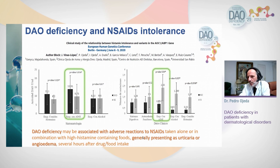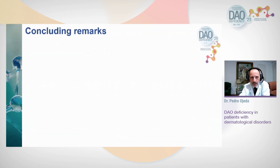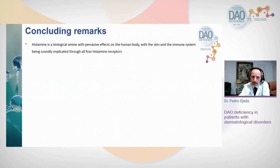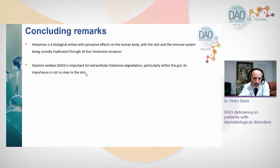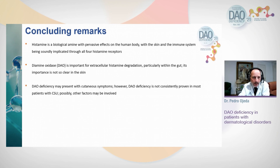Concluding remarks: histamine is a biological amine with pervasive effects on the human body, with the skin and immune system soundly implicated through all four histamine receptors. DAO is important for extracellular histamine degradation, particularly in the gut, but its importance is less clear specifically for the skin. It could degrade histamine at the gut level.